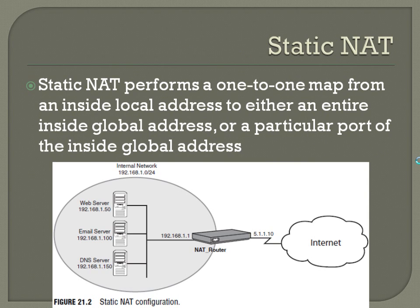For static NAT, covering what we talked about in the last chapter: static NAT performs a one-to-one map from an inside local address to either an entire inside global address or a particular port of an inside global address. You might be mapping that public IP statically to one of these ports or IPs on this side, or to a particular port number for each of these.